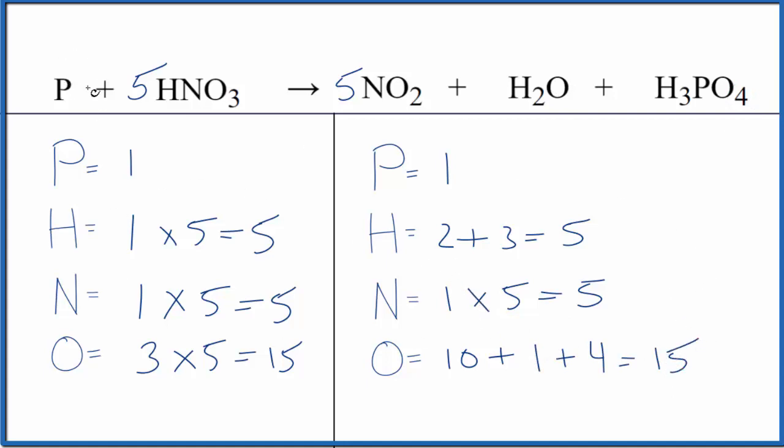More likely than not you're not going to see just P here in the equation. It's going to be P4. That's normally how we find phosphorus. But if you're asked to balance this equation that's how you would do that.